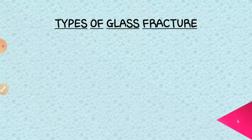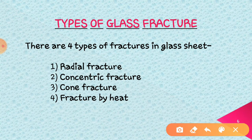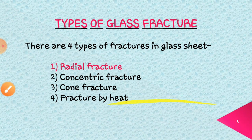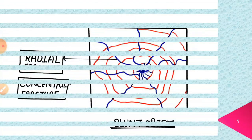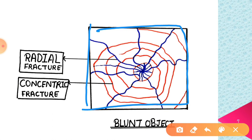Now let us move ahead. Here are the types of glass fractures. Basically, there are four types of glass fractures: the first one is radial fracture, the second one is concentric fracture, the third one is cone fracture, and the fourth one is fracture due to heat. Let us understand all these types with the help of diagrams. In this first image, you can see a glass sheet in which a blunt object hits at a particular place. We can identify that the object hit at that place because all the fractures originate from that particular point, indicating where the projectile hit the glass sheet.